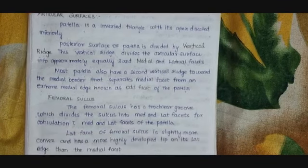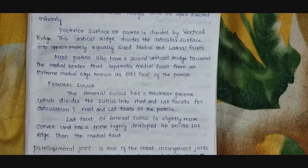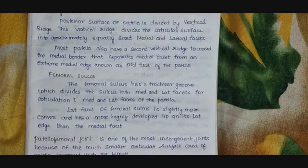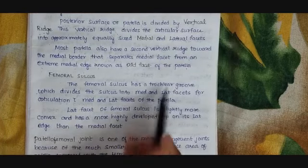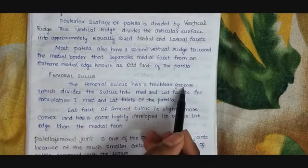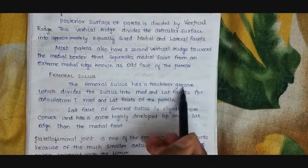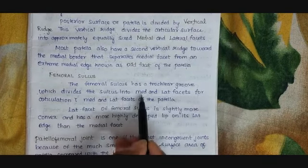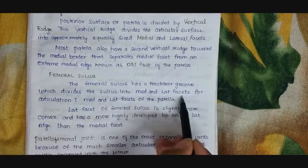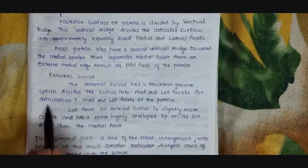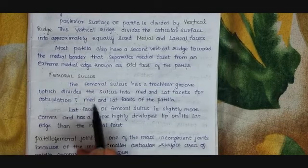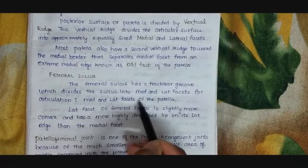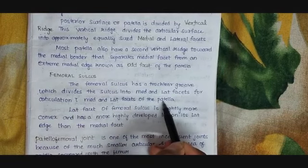Now let us discuss about the femoral sulcus. The femoral sulcus has a trochlear groove which divides the femoral sulcus into medial and lateral facets for articulation with the medial and lateral facets of the patella.